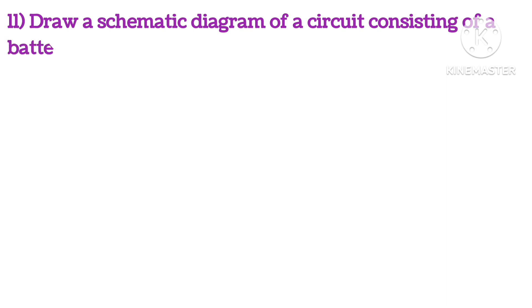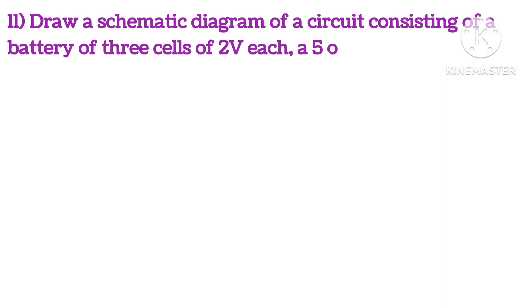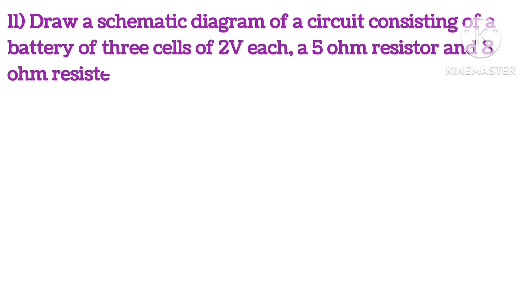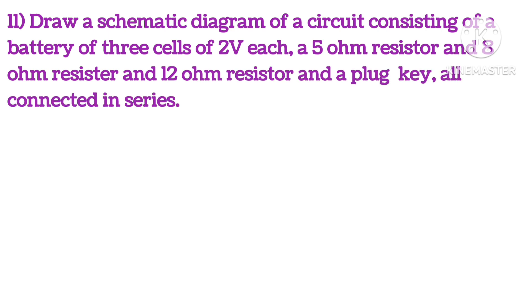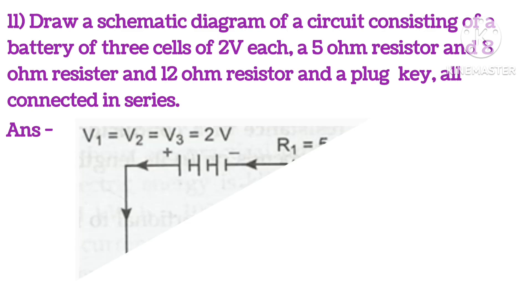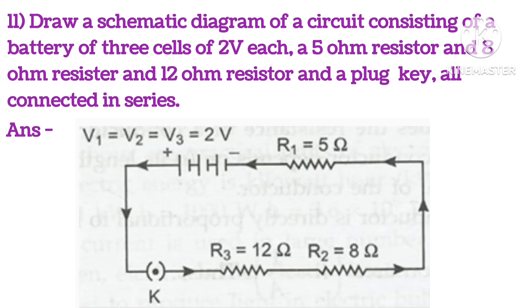Draw a schematic diagram of a circuit consisting of a battery of three cells of 2 volts each, a 5-ohm resistor, an 8-ohm resistor, and a 12-ohm resistor, and a plug key, all connected in series. You can see the diagram here with the five-ohm, eight-ohm, and twelve-ohm resistors and a 2-volt per cell supply.